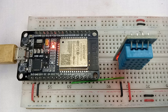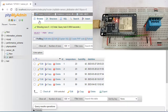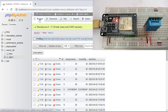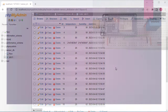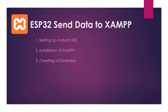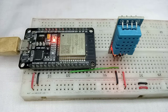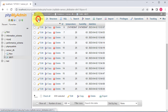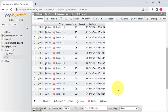Hello friends, welcome to my video on how to send temperature and humidity data from an ESP32 to a local host XAMPP server. In this video, I'll be walking through the entire process step by step, starting with setting up the Arduino IDE for ESP32, installation of XAMPP on your computer, creating a database in phpMyAdmin, writing a PHP script to store data to a MySQL database, and finally writing the code to send the temperature and humidity data to local host. By the end of this video, you'll have a working prototype that you can customize and build upon to create your own projects.